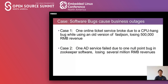These are real cases in my company. Case one: one online tech service was broken due to a CPU-hung bug when using an old version of FastJSON, which cost losing 500,000 RMB in revenues. FastJSON is an open source library very popular in China — a Java library to parse JSON data.